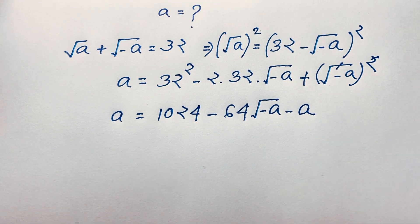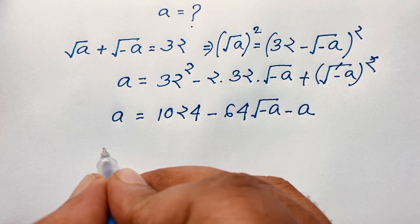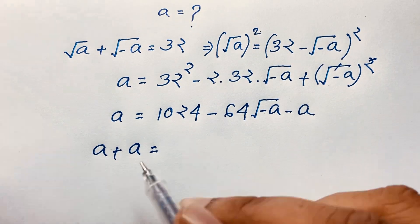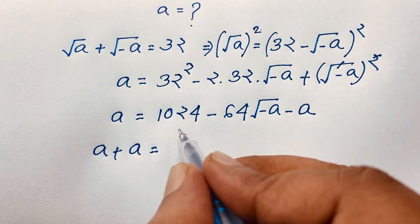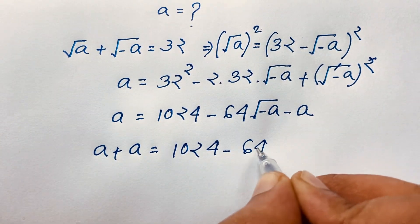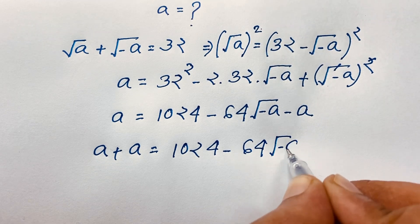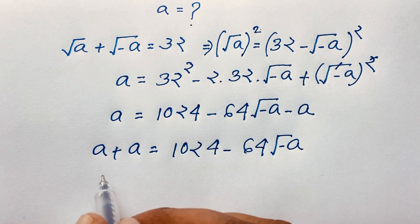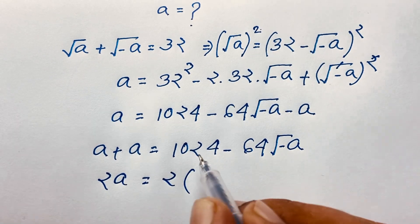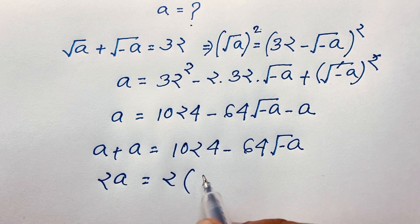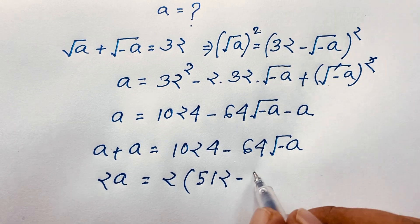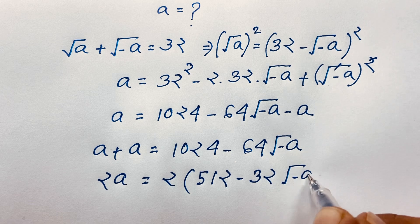A on one side and A from the squared term moves over to be positive A. So A plus A gives 2A, and it equals 1024 minus 64 times square root minus A. This 2 is common, so 1024 divided by 2 is 512, and 64 divided by 2 is 32. Dividing both sides by 2, we get A equals 512 minus 32 times square root minus A.